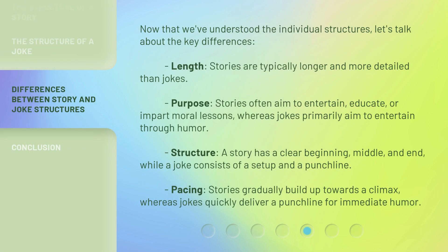Now that we've understood the individual structures, let's talk about the key differences. Length: stories are typically longer and more detailed than jokes. Purpose: stories often aim to entertain, educate, or impart moral lessons, whereas jokes primarily aim to entertain through humor. Structure: a story has a clear beginning, middle, and end, while a joke consists of a setup and a punchline. Pacing: stories gradually build up towards a climax, whereas jokes quickly deliver a punchline for immediate humor.